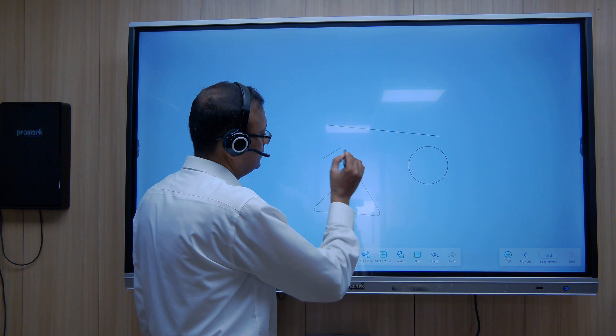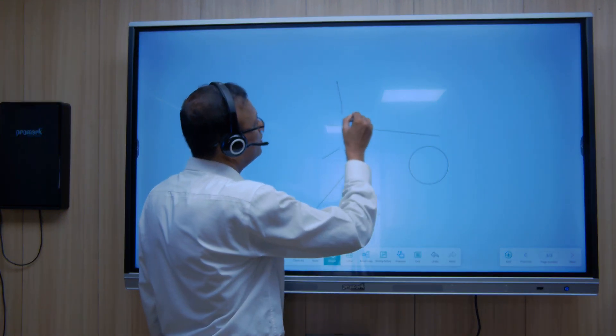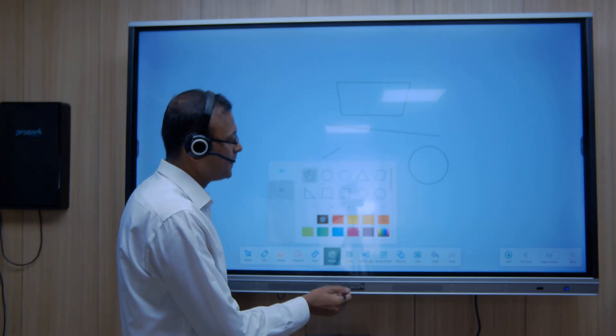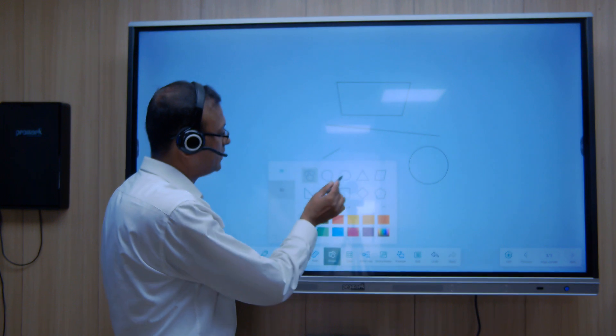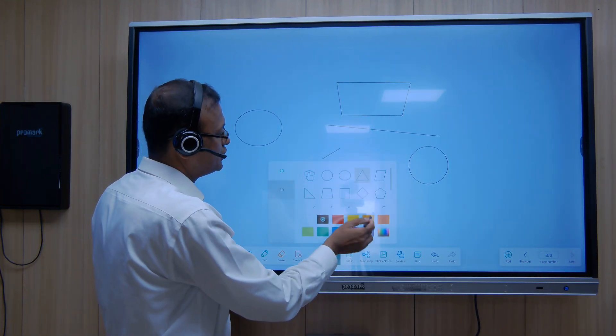If I am drawing a triangle, it detects and gives me a perfect triangle. If I want to draw a square, it detects and gives me a perfect square. And we also have these pre-loaded images.